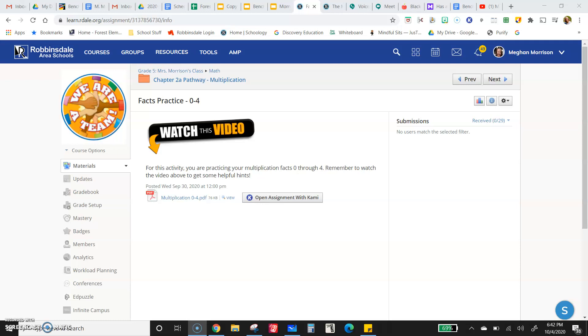If I have five groups of zero, I don't have anything. If I have zero groups of three, I also don't have anything because I have zero groups. One times anything is that number—one group of four is four, or four groups of one is still four.